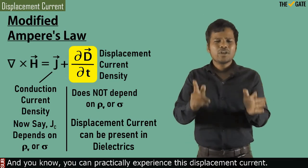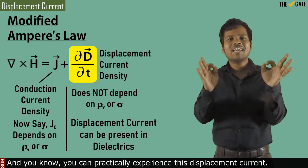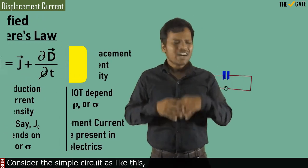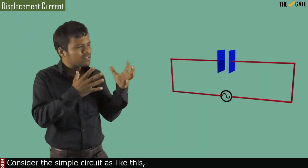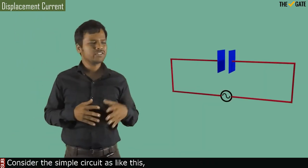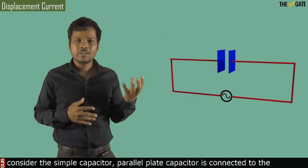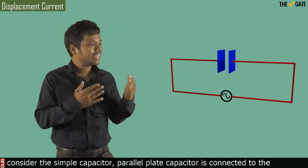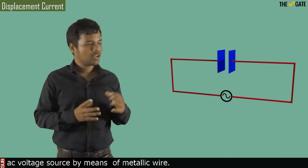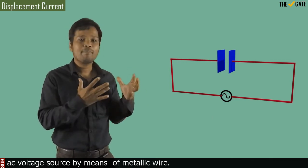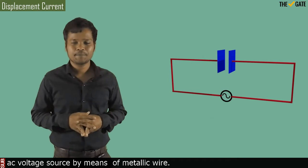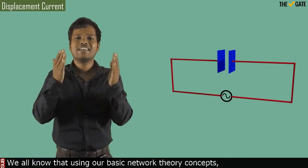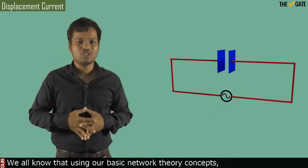You can practically experience this displacement current. Consider a simple circuit with a parallel plate capacitor connected to an AC voltage source by means of metallic wires.